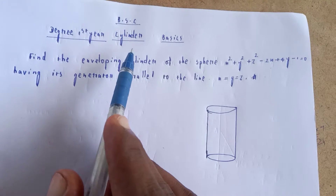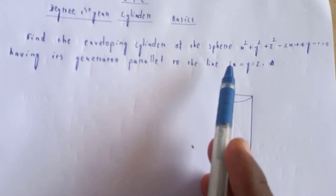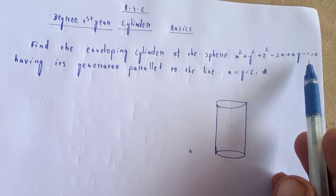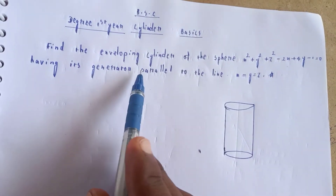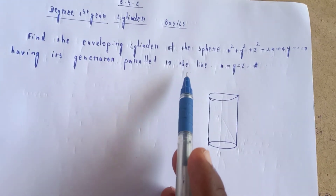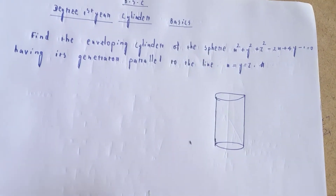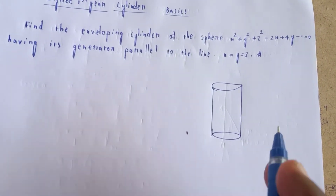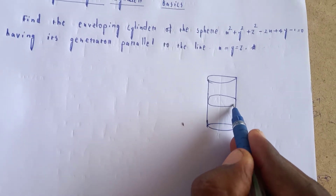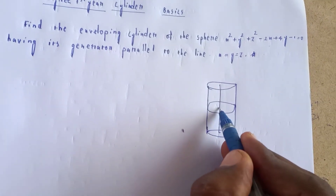Welcome to my channel BSc Cylinder Basics. Find the enveloping cylinder of the sphere x squared plus y squared plus z squared minus 2x plus 4y minus 1 is equal to 0, having its generator parallel to the line x is equal to y is equal to z. This problem is the envelope of the sphere.